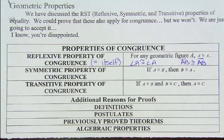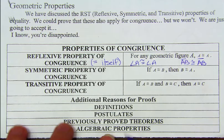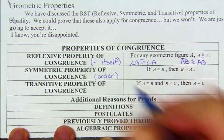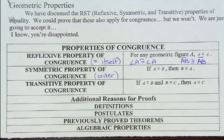The symmetric property is one that we probably won't use too often. The symmetric property is basically about the order of things. So if we're told that A is congruent to B, we can also say that B is congruent to A. So really all that the symmetric property does is switch the order.